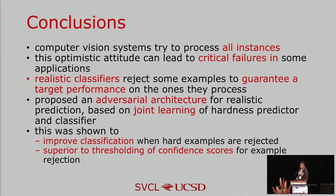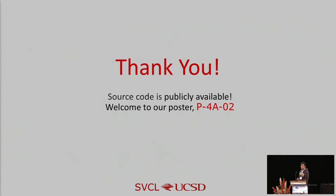In conclusion, current computer vision systems try to process all instances regardless of difficulty. This optimistic attitude can lead to critical failures in applications like autonomous driving and medical diagnosis. Our realistic predictor addresses this by rejecting hard examples to guarantee a target performance on accepted ones. We propose an adversarial architecture to jointly train the classifier and a specific hardness predictor. This has shown improvement in classification when hard examples are rejected, and is superior to thresholding by confidence score. Source code is available online.